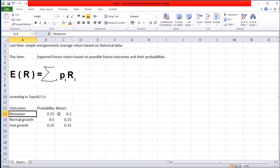So if a recession happens, you'd probably suffer 20% loss. In the case of normal growth and fast growth, you'd gain 15% and 35% return.